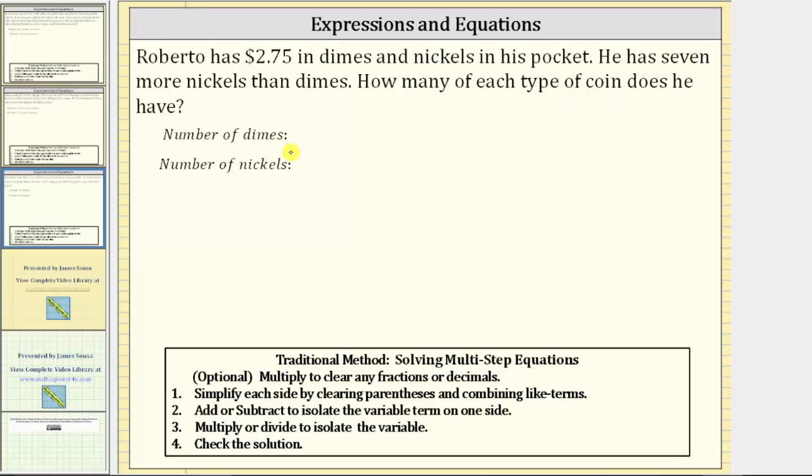We will begin by writing expressions for the number of dimes and the number of nickels. And because he has seven more nickels than he has dimes, let's let the variable d represent the number of dimes.